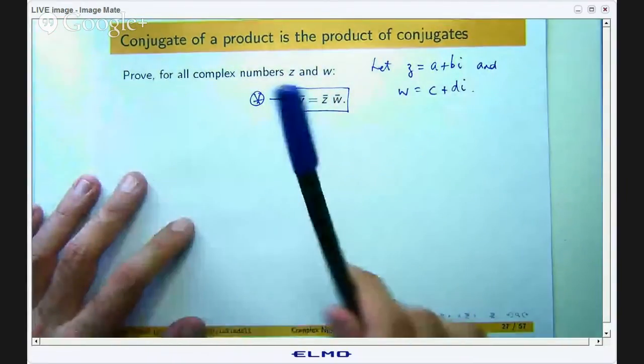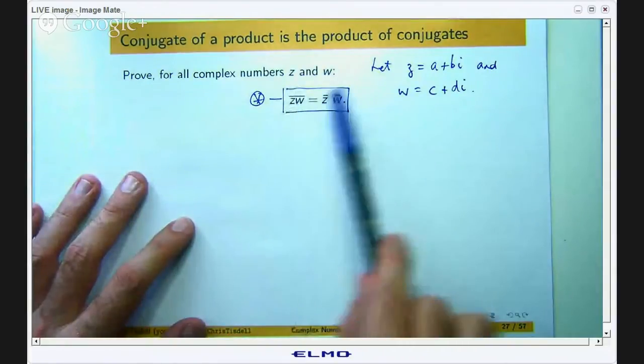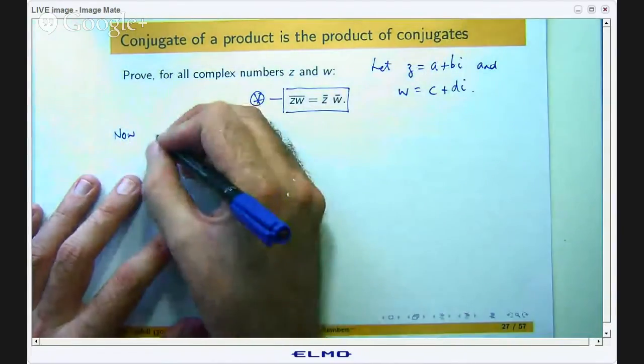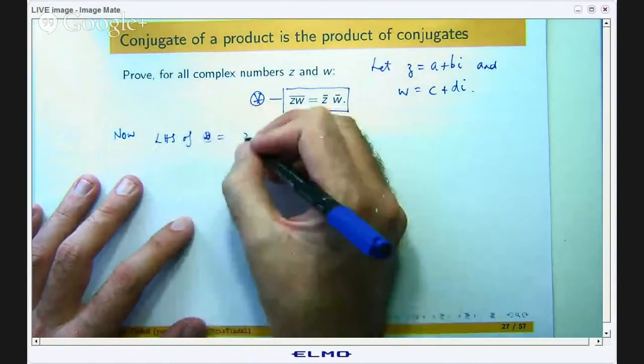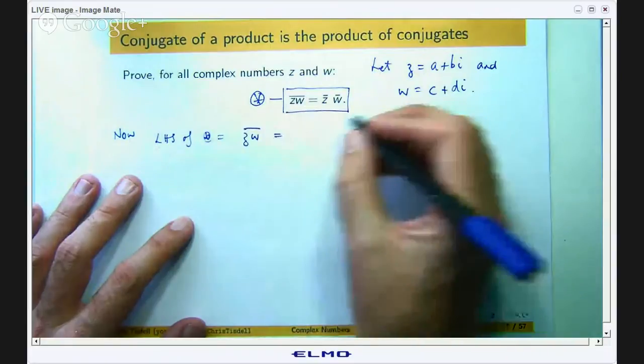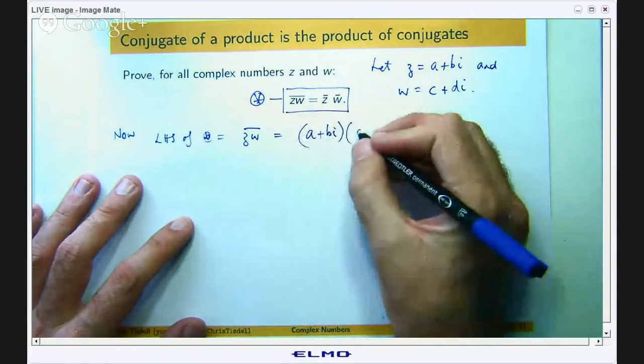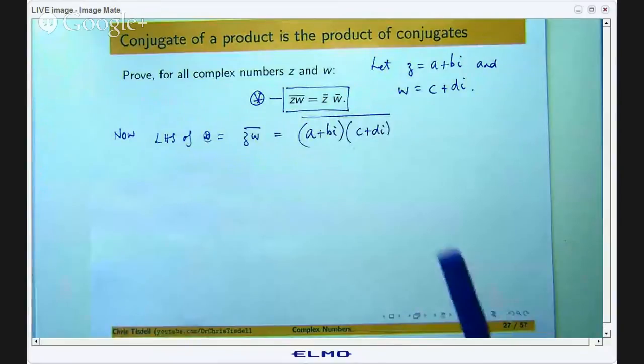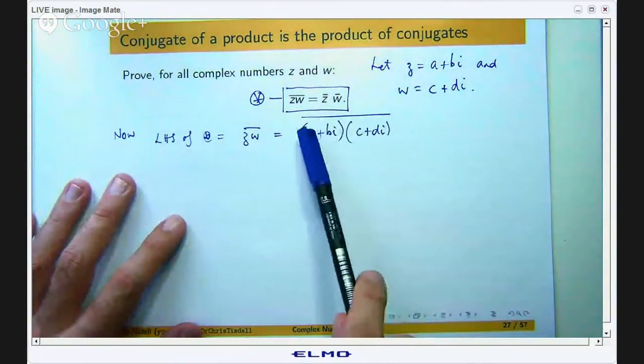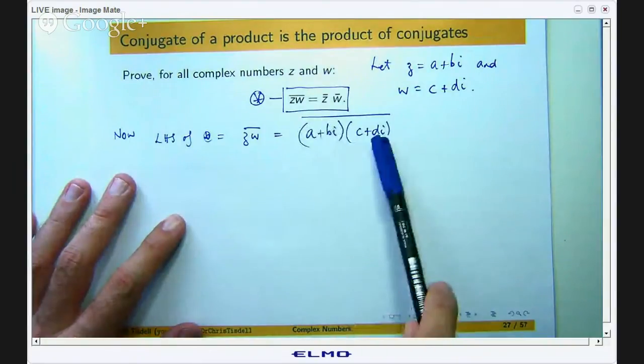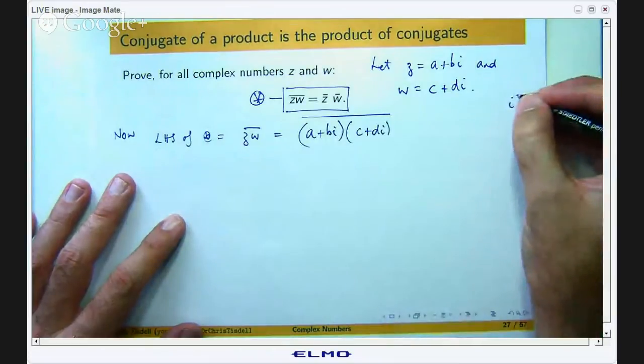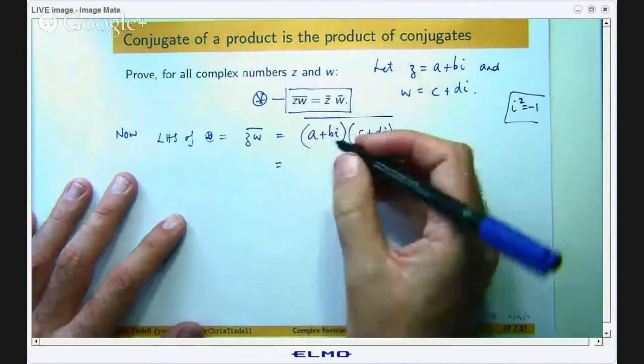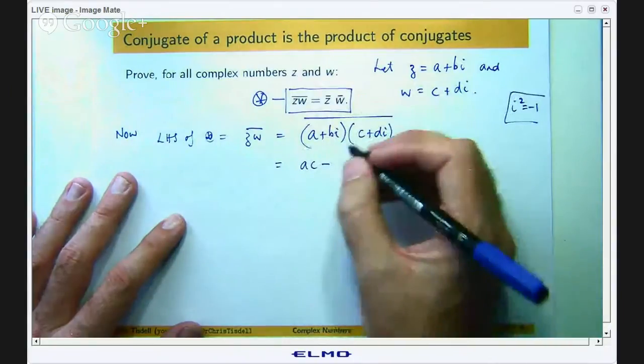Alright so to work out the left hand side of star, we are going to multiply these two together and take the conjugate. So it is a plus bi times c plus di all conjugated. Okay well let us expand this like we normally would so the real part is going to be a times c plus bi times di and the i squared remember is negative 1. So the real part of this calculation here is going to be ac minus bd.